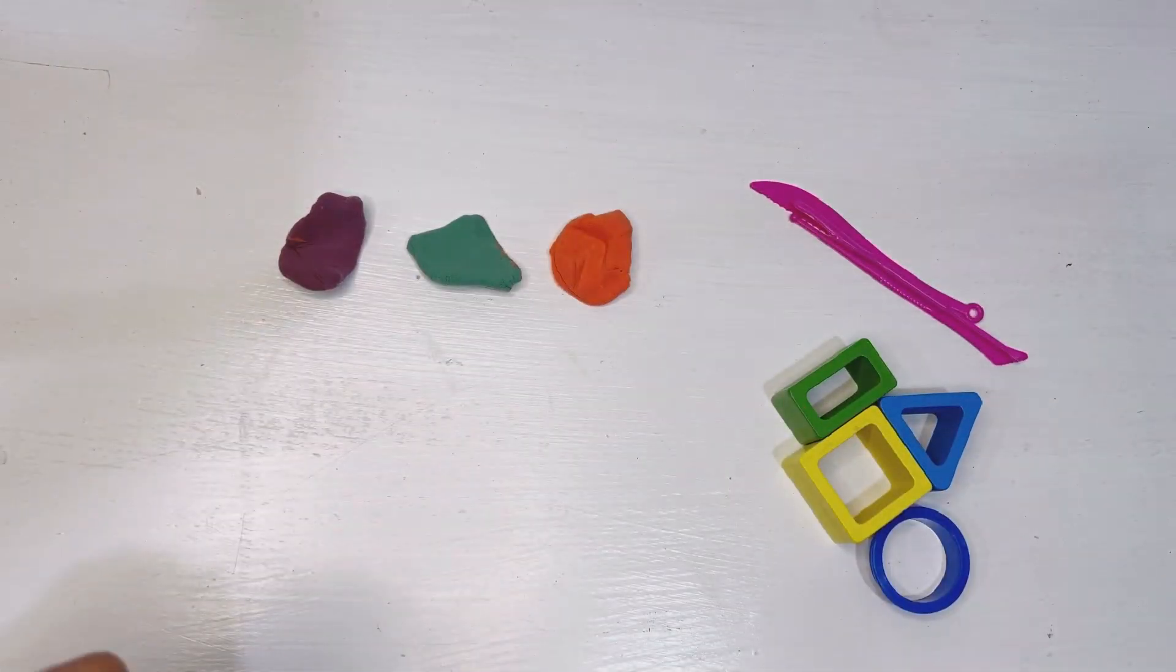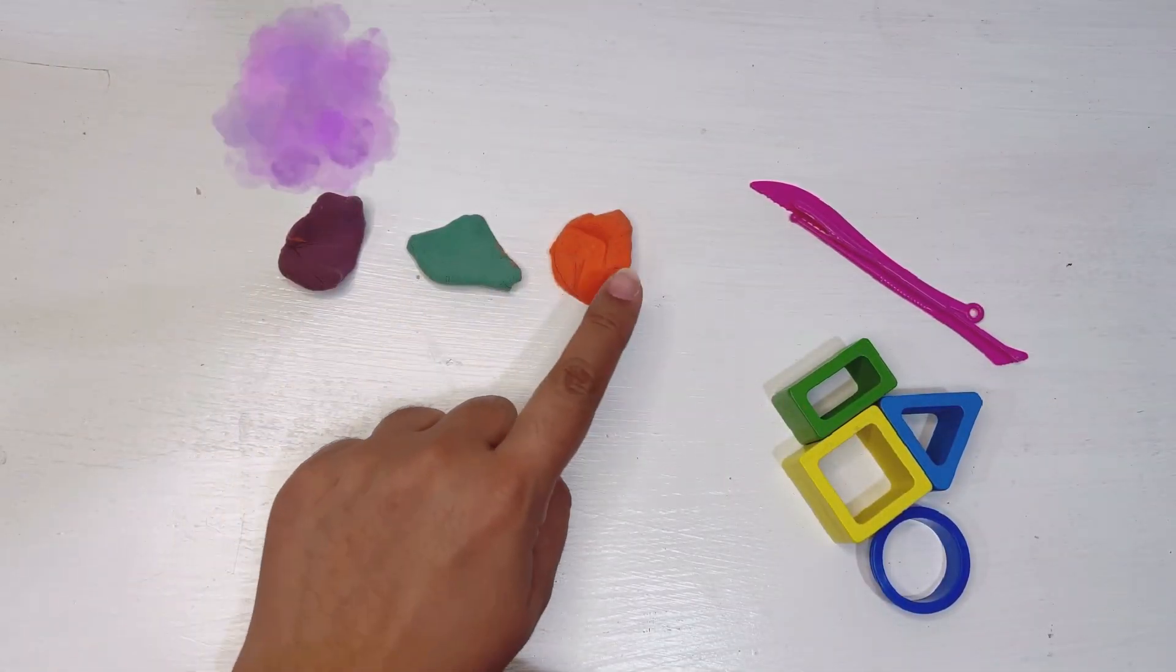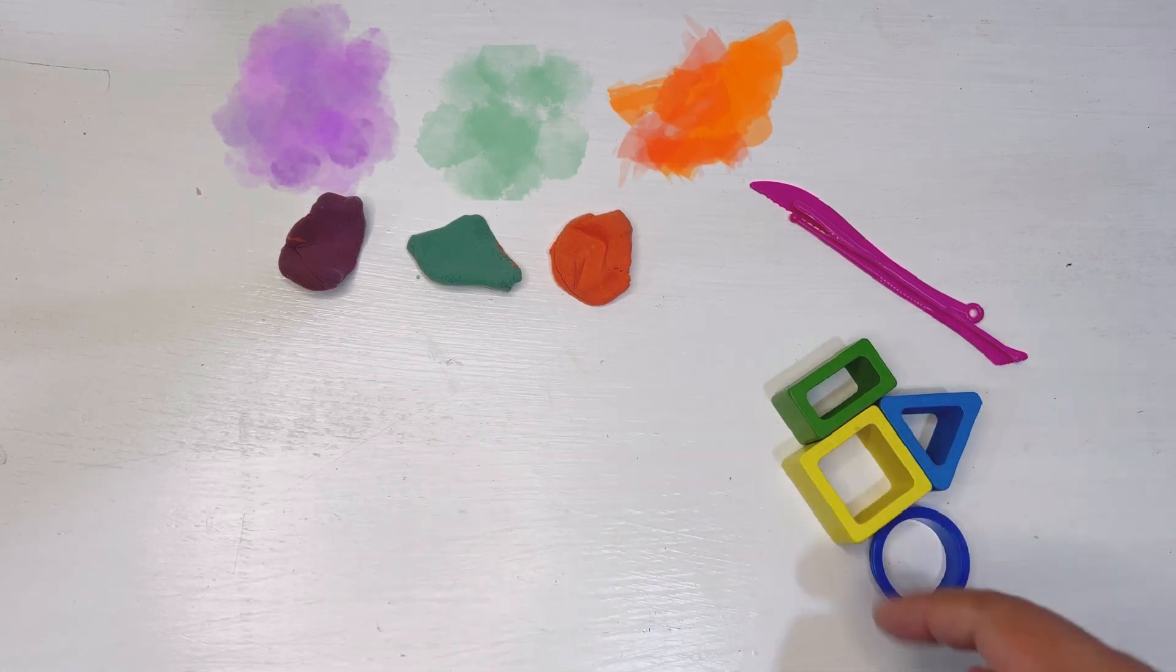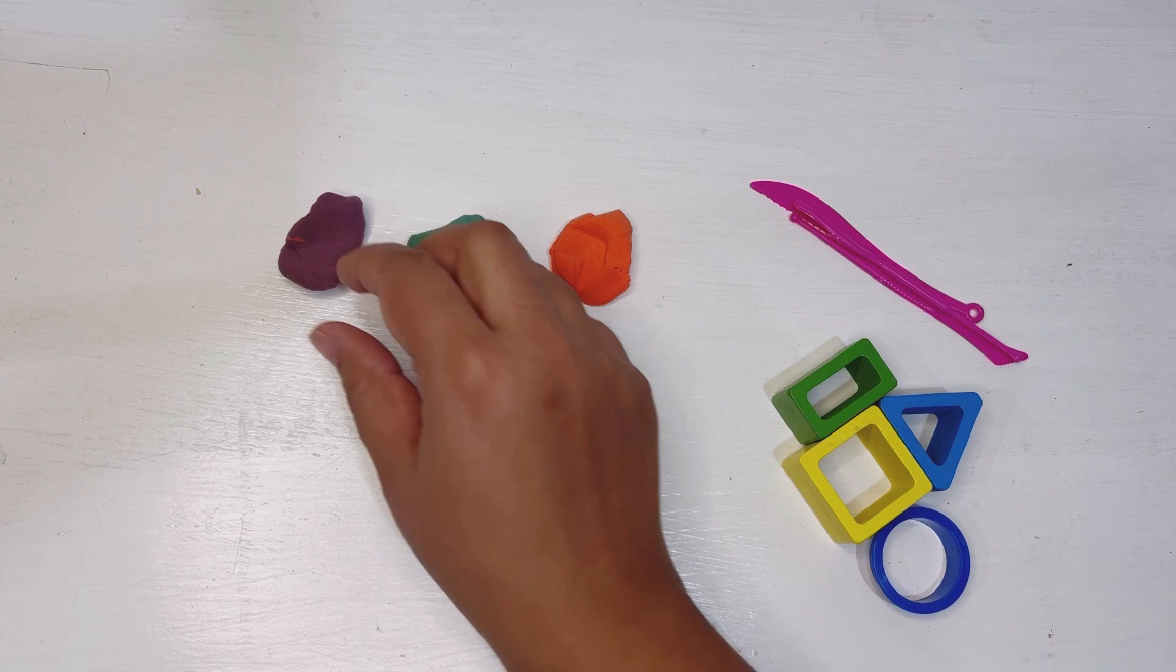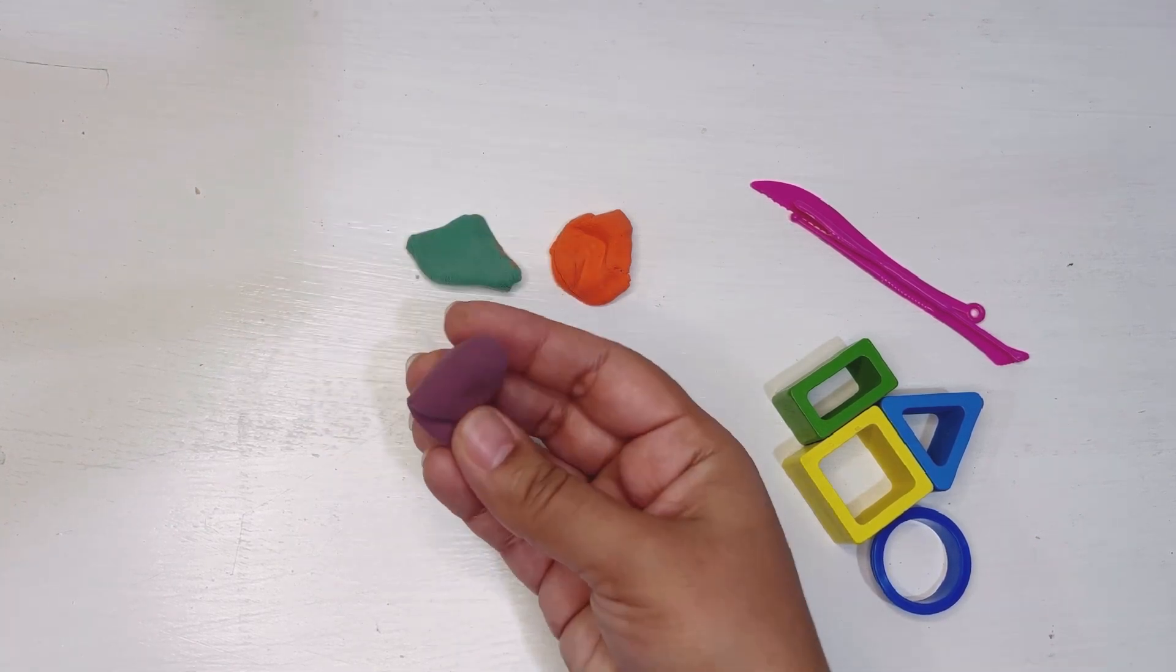Hello guys, in this video we have these three colors available: purple, green, and orange. We are going to make shapes with these three colors. So let's get started. First we have this purple play-doh.